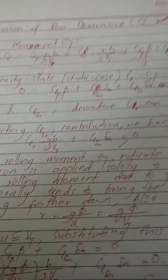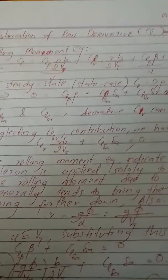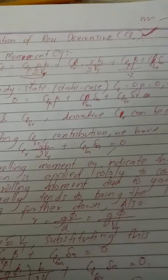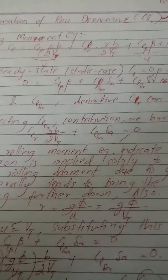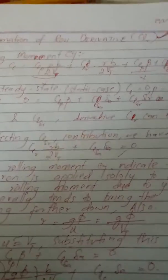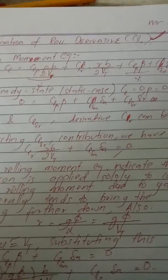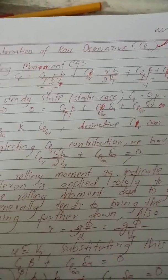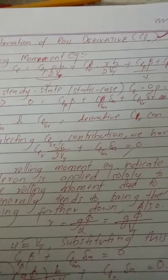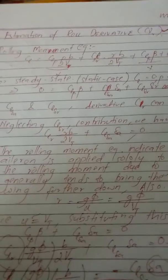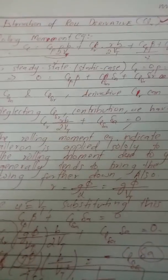Under lateral and directional stability, we have calculated the steady coordinated turn without slip, and also this roll derivative due to the aileron, which is part of the wing. This creates further estimation for lateral and directional stability as far as the maneuvering of the aircraft is concerned.